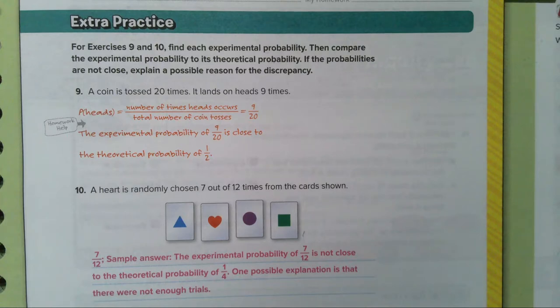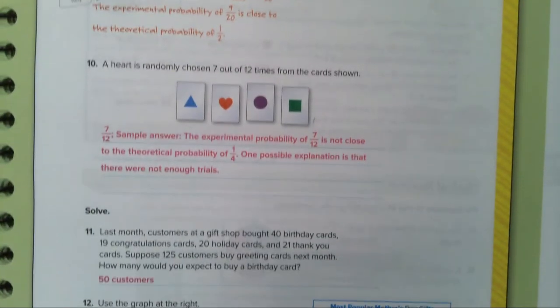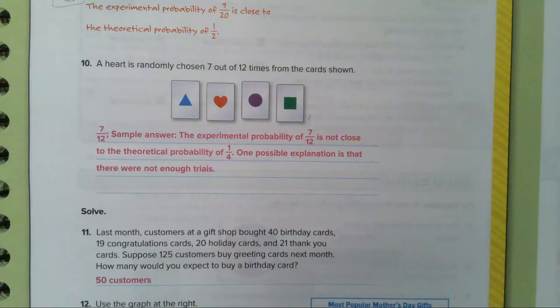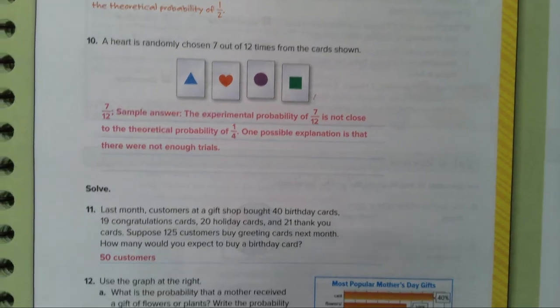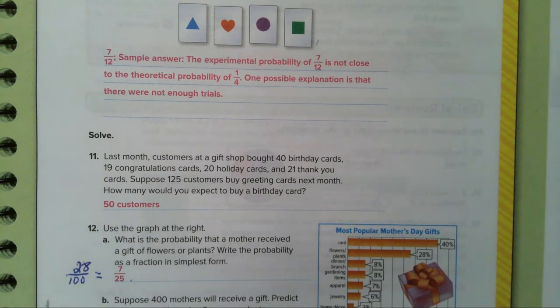On page 727, number nine was done for you, so you had to do number 10. Find each experimental probability, then compare the experimental probability to its theoretical probability. If the probabilities are not close, explain a possible reason for the discrepancy. The experimental probability is seven out of 12, which is not close to the theoretical probability of one out of four. A possible explanation is there were not enough trials — that's a good answer for the test.